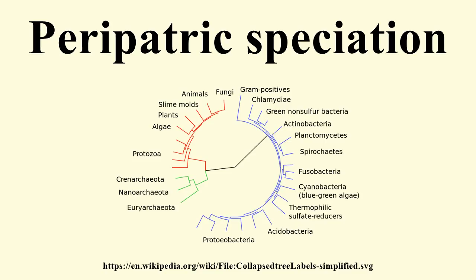However, peripatric speciation, unlike allopatric speciation, proposes that one of the populations is much smaller than the other. One possible consequence of peripatric speciation is that a geographically widespread ancestral species becomes paraphyletic, thereby becoming a paraspecies. The concept of a paraspecies is therefore a logical consequence of the evolutionary species concept, by which one species gives rise to a daughter species. The evolution of the polar bear from the brown bear is a well-documented example of a living species that gave rise to another living species through the evolution of a population located at the margin of the ancestral species range.